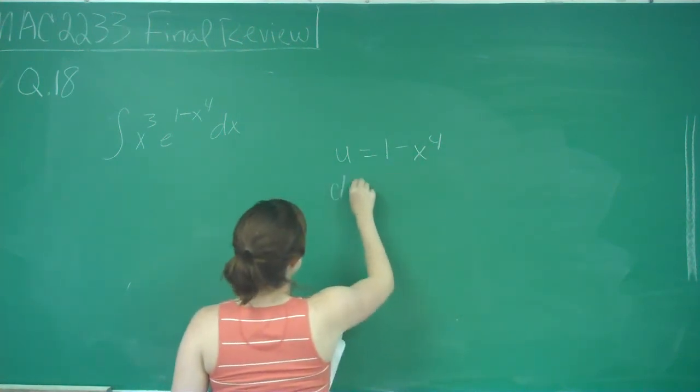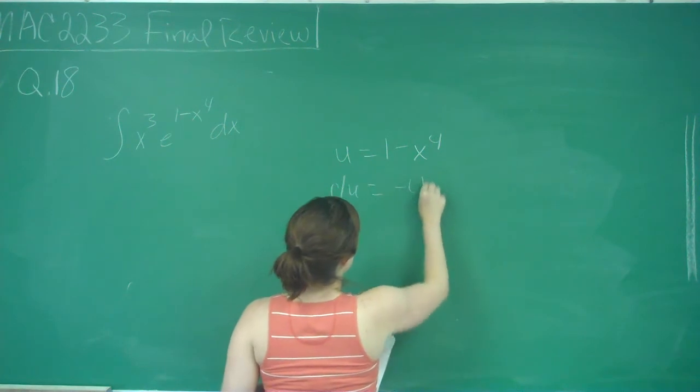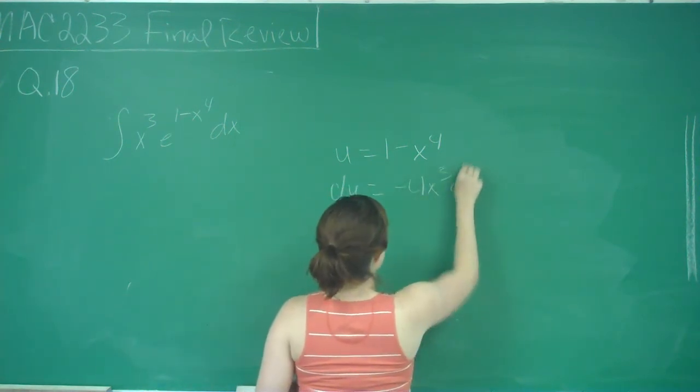And then du will be equal to negative 4x³ dx.